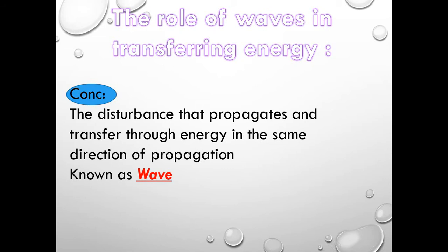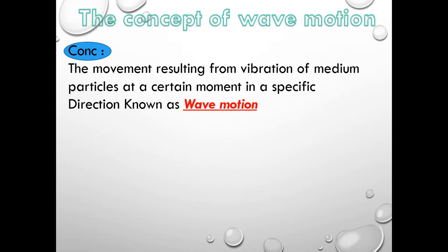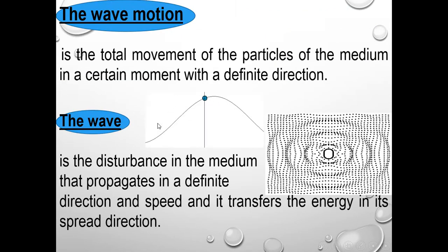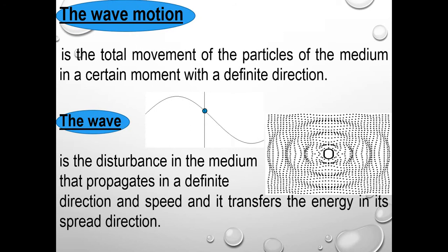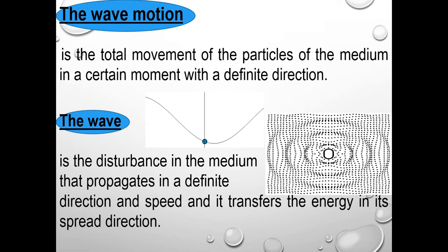This is called a wave. The concept of wave motion is the movement which results from the vibration of the medium particles at a certain moment in a specific direction. The wave motion is defined as the total movement of the particles of the medium in a certain moment with a definite direction.